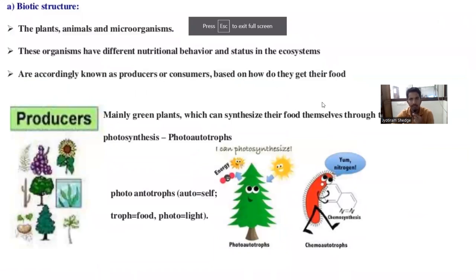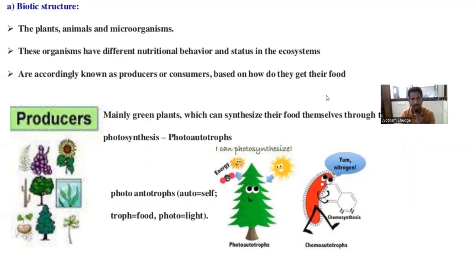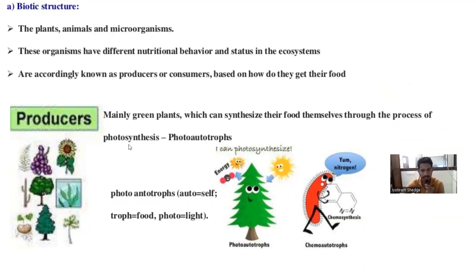In the biotic structure, we include plants, animals, and microorganisms. These organisms have different nutritional behaviors and statuses in the ecosystem. Producers and consumers are classified based on how they get their food. Producers are mainly green plants — they synthesize their own food through the process of photosynthesis, where light energy is converted into chemical energy: 6CO₂ + 6H₂O in the presence of light forms glucose (C₆H₁₂O₆).